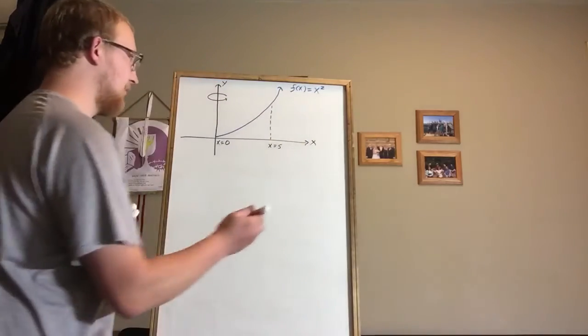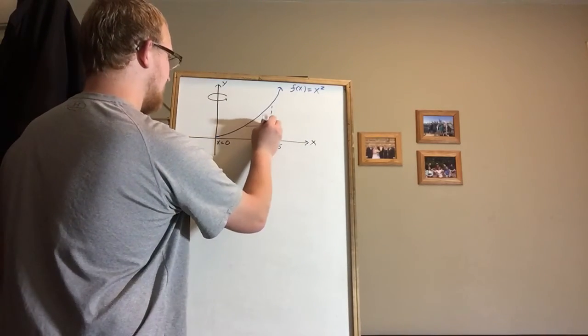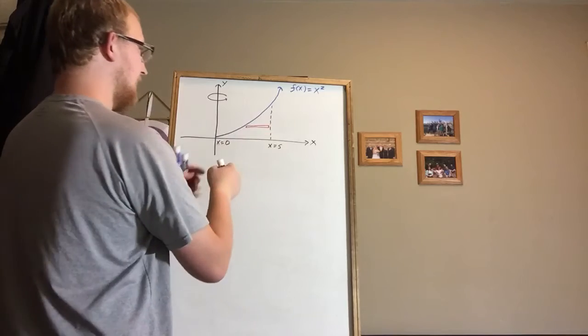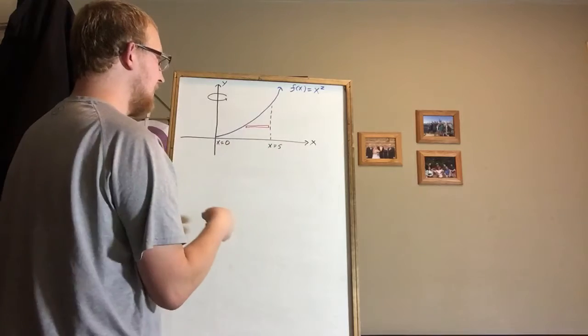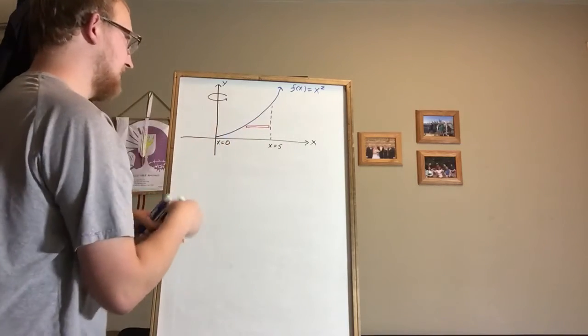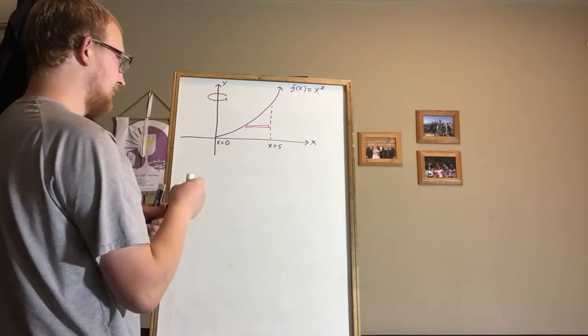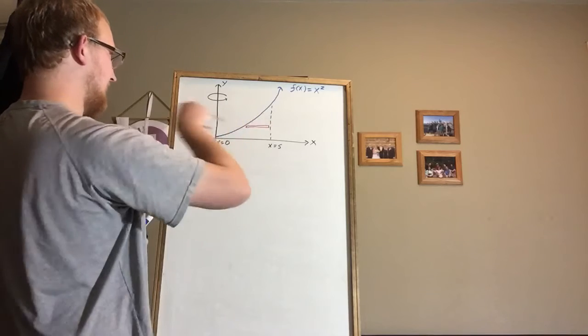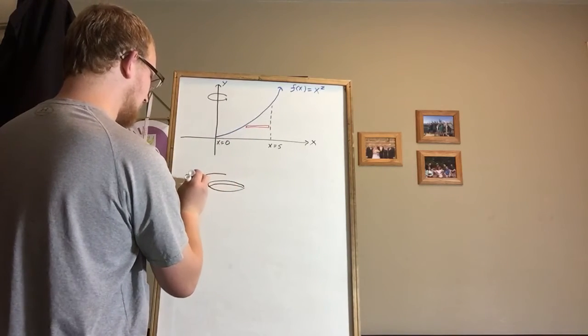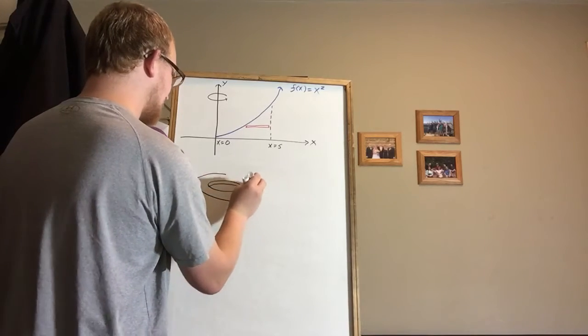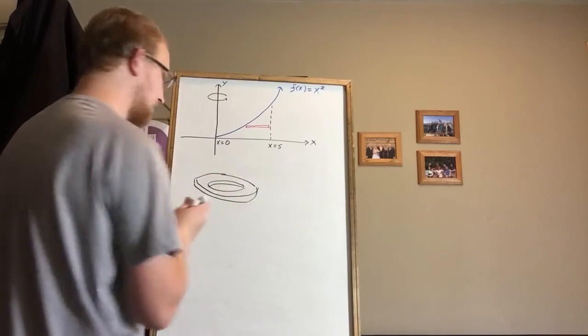So remember last time when we did washers we chose our infinitesimal strip parallel with the x-axis, which meant we were integrating with respect to y. And when we revolved a shape like that we ended up with a washer. So if we revolved a thin strip like that around the y-axis we would end up with a washer. And that's what last video was about, was about the washer method.